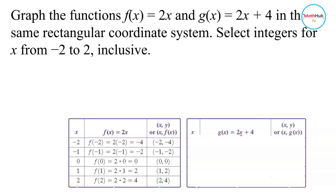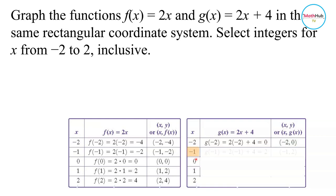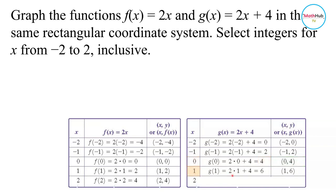Similarly, if we use the function g(x) defined as two x plus four, and plug in the same x values: two times negative two is negative four, plus four is zero — ordered pair (−2, 0). If x equals negative one, two times negative one is negative two, plus four is positive two — ordered pair (−1, 2). If x is zero, two times zero is zero, plus four is four — so (0, 4). If x is one, two times one plus four is six — ordered pair (1, 6). And lastly, if x is two, g(2) equals two times two plus four, which equals eight — ordered pair (2, 8).